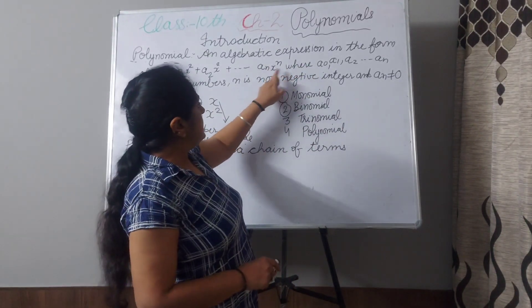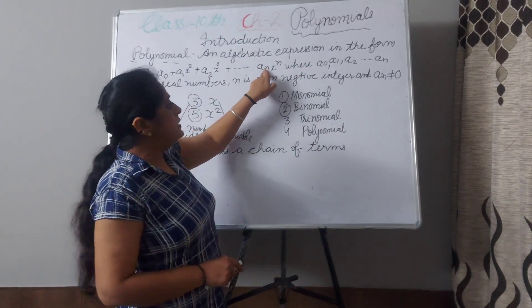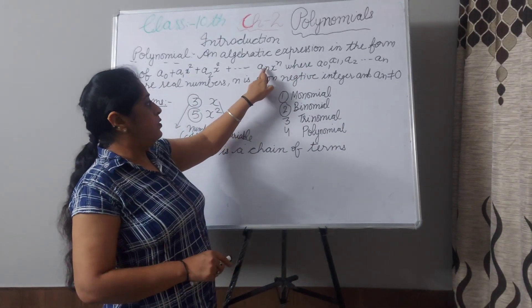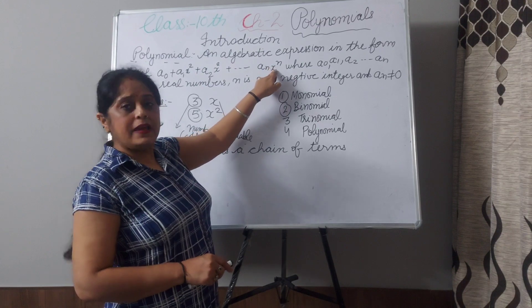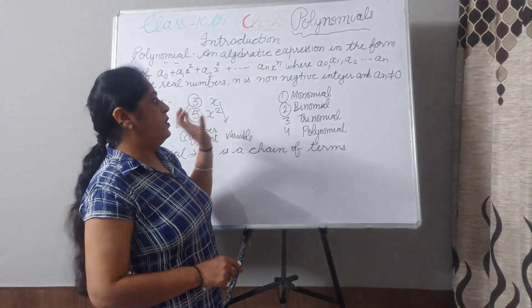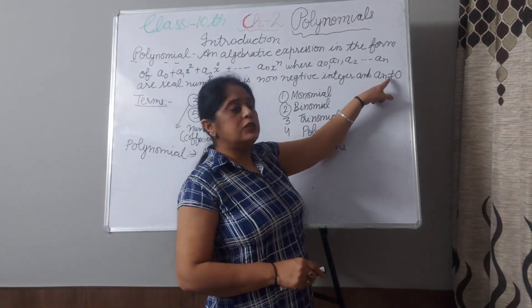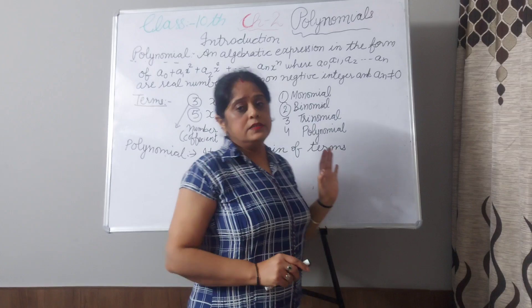Here you have seen 'an'. If an is 0, then 0 multiplied by x power n will be 0. So it is written that an should not be 0.